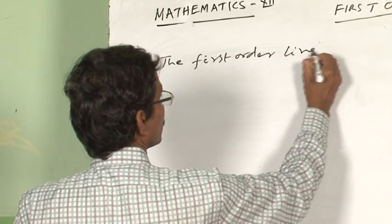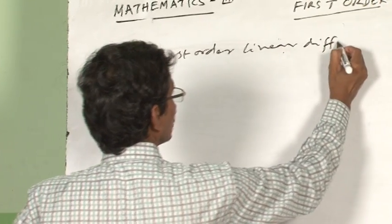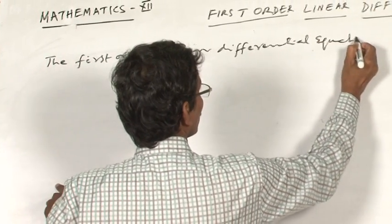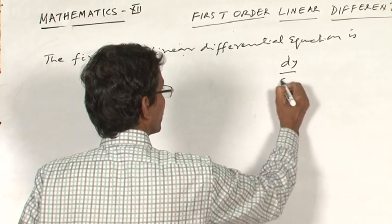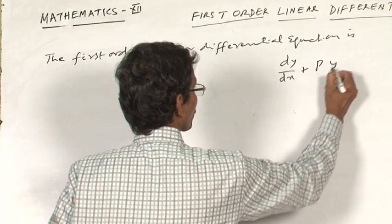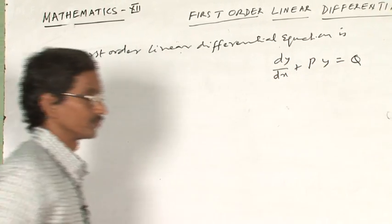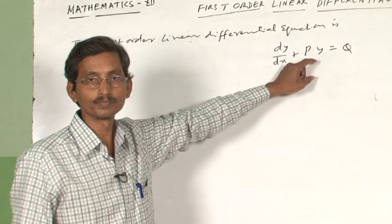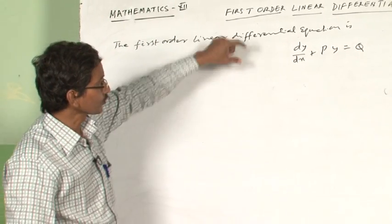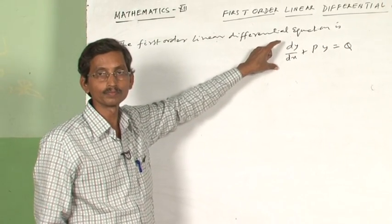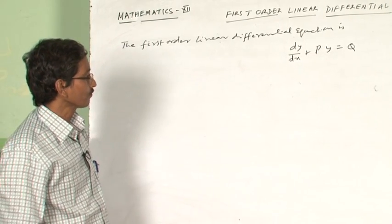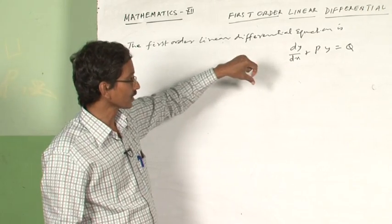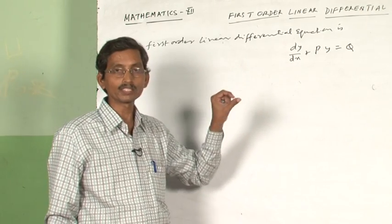The first order linear differential equation is dy by dx plus P y is equal to Q, where P and Q are functions of x. To find the solution of this first order differential equation, we find the integrating factor, which puts it in the form of variable and separable.